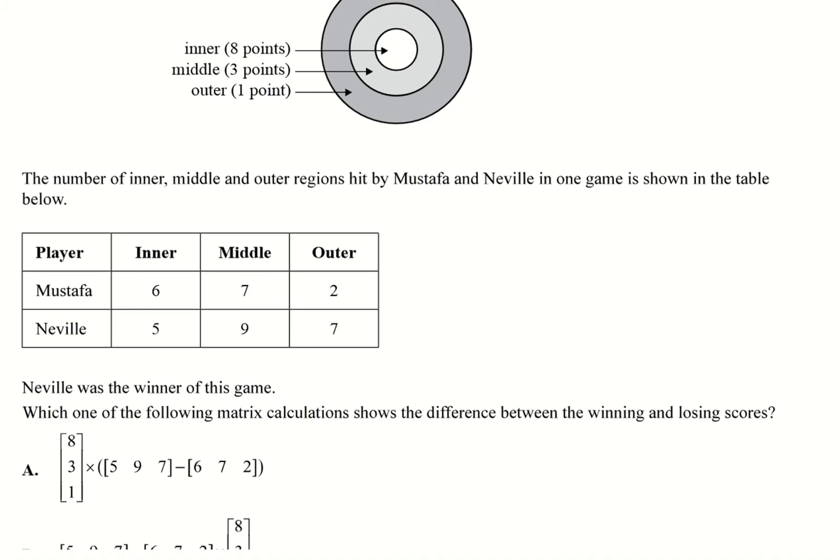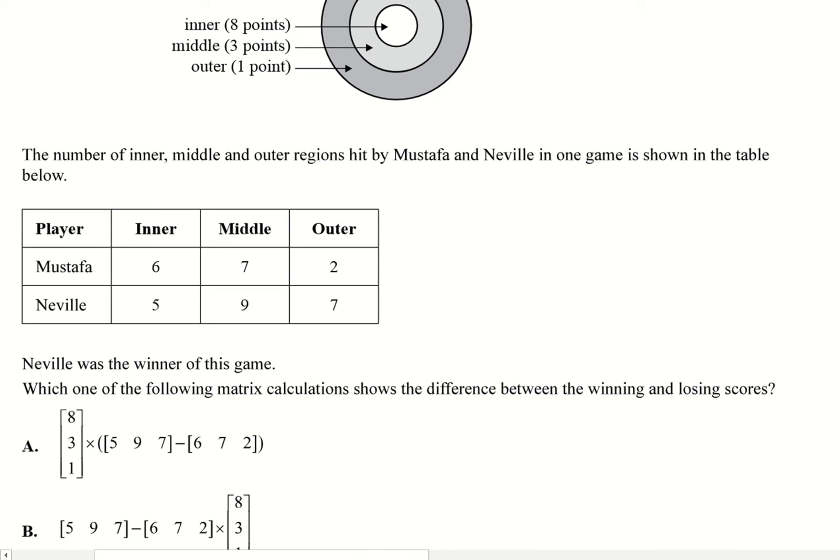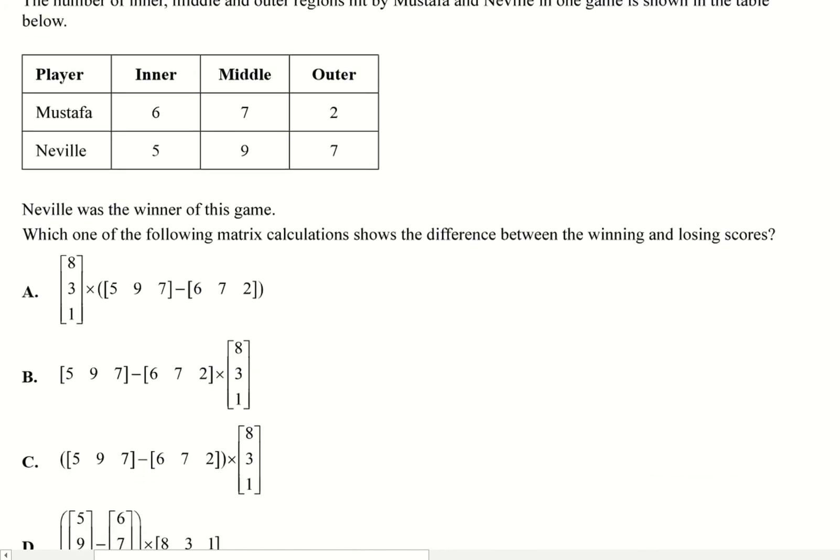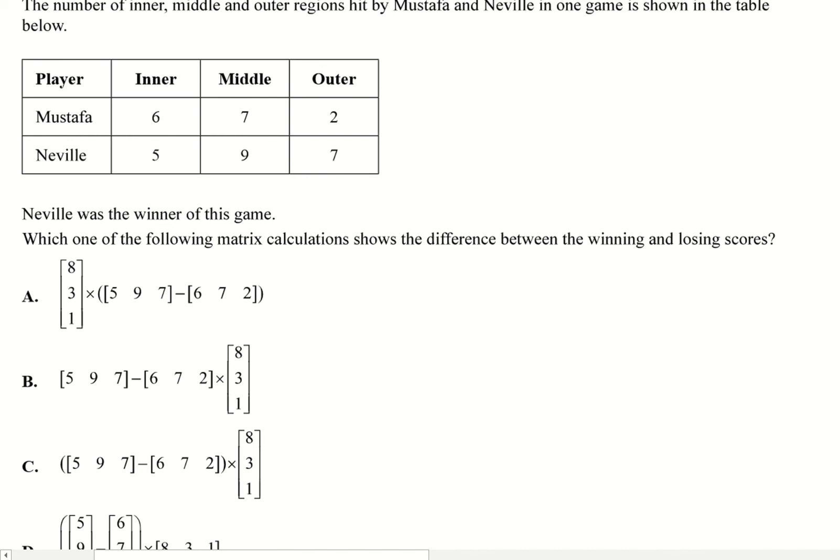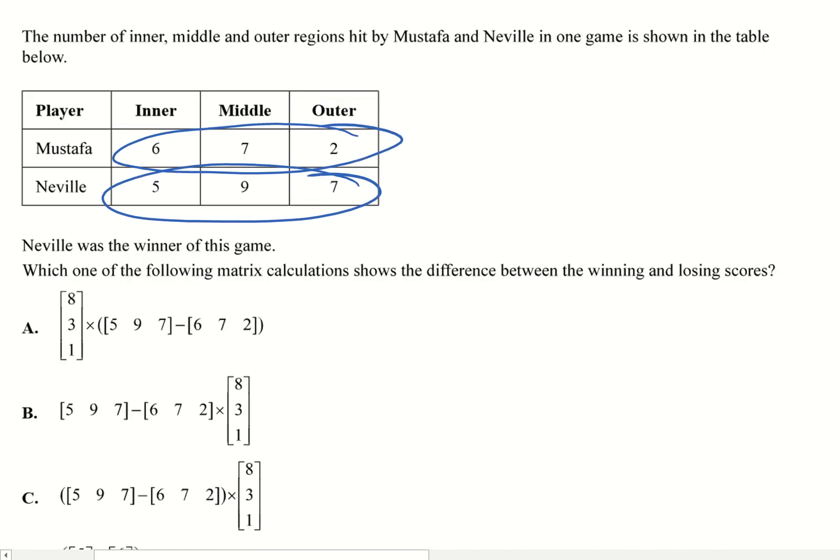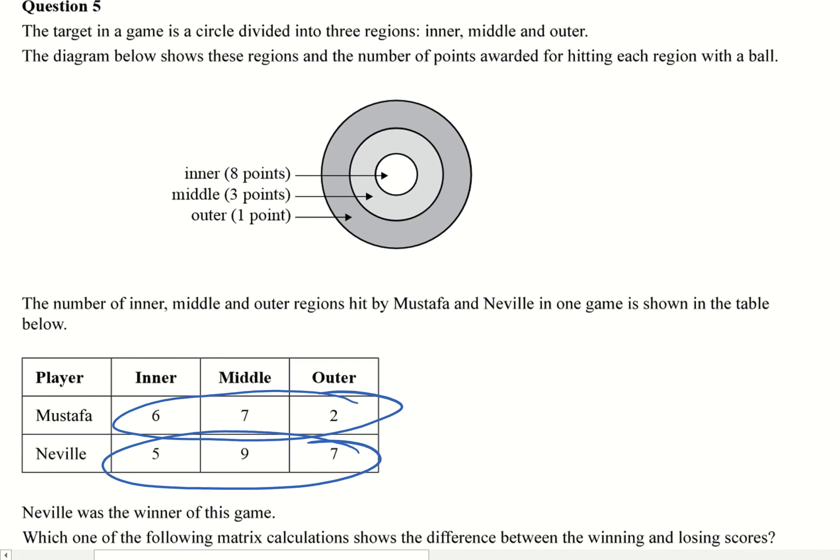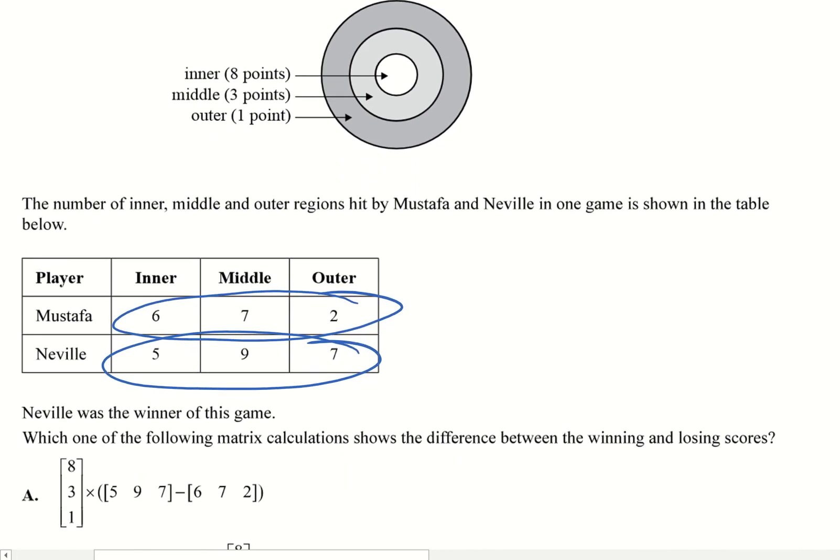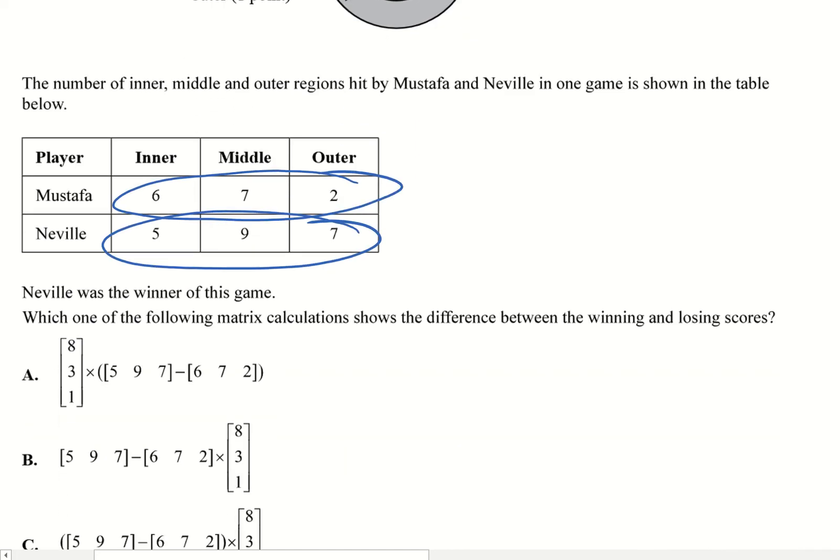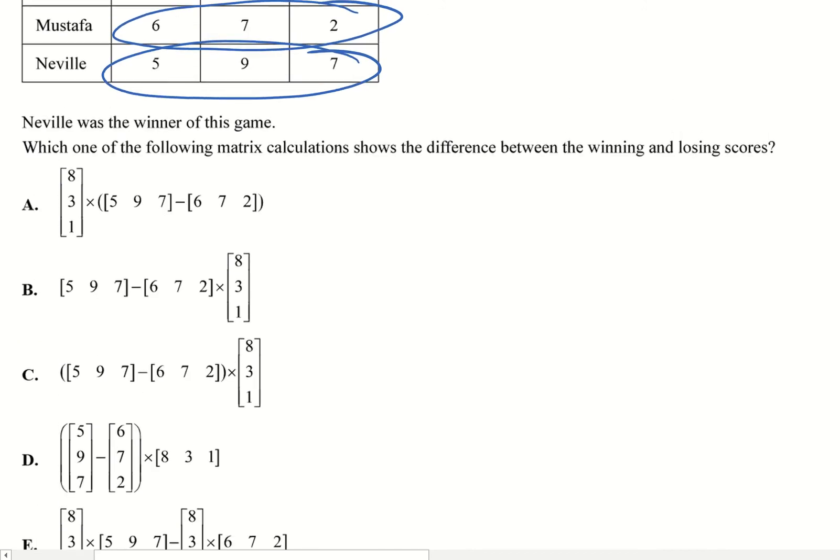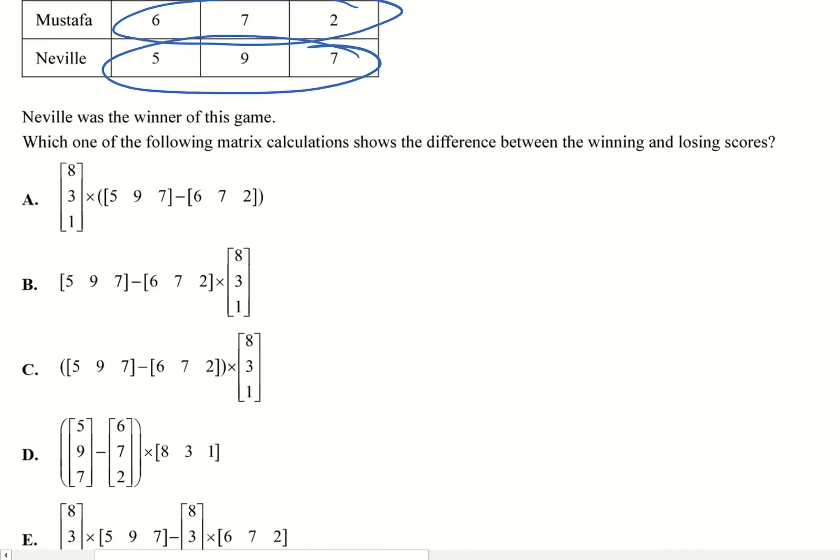So what you're looking at, you've got Mustafa with those ones, but each of those sections, so the inner and middle and outer, have a specific point. Basically what you want to look for is you want to know the difference between Mustafa and Neville. So you're going to be looking at basically subtracting that to start with, because you want to know how many regions were hit by each player, how many middles, and how many outers.